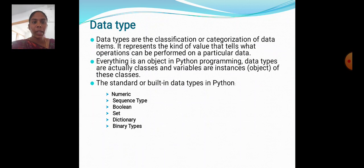Next, data type. Data types are the classification or categorization of data items. It represents the kind of value that tells what operations can be performed on a particular data. Everything is an object in Python.